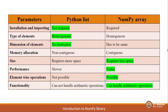Next point, memory allocation. Whenever we create a list, all the elements in the list are stored in memory in a non-contiguous manner. Whereas with respect to NumPy arrays, every single element stored in that array is always in contiguous manner in the main memory.